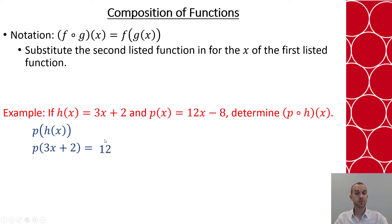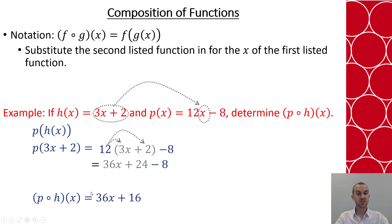So I've got the 12. I'm going to take this whole expression, substitute in for x, and then remember that there's the minus 8. Now I want to simplify my expression by distributing the 12, which will give me 36x + 24 - 8. Simplify by doing the 24 minus 8. And this will give me that p of h of x will equal 36x + 16.